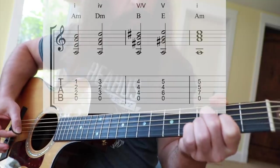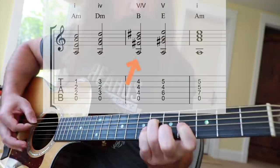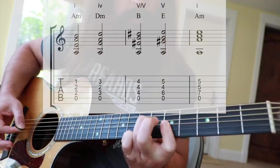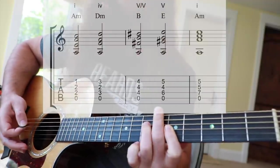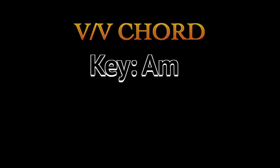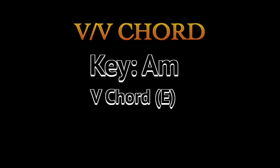A crucial part of the classical sound is the secondary dominant. That's when you play a chord outside of the key to create tension. The most common secondary dominant is the V of V. In the key of A minor, the V chord is E. We arrive at the V chord by counting up five notes from A.